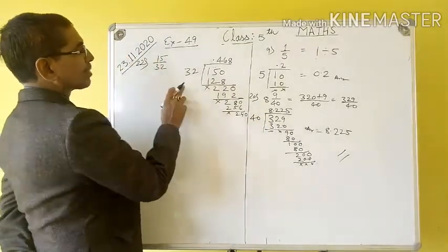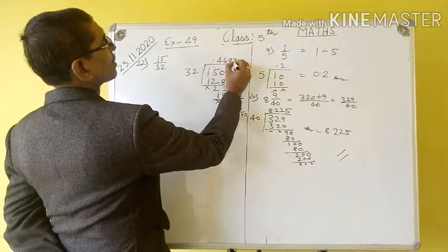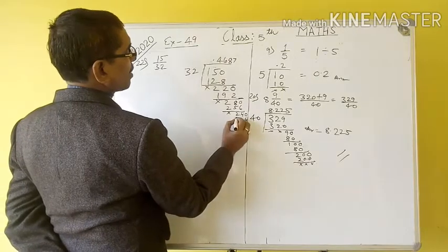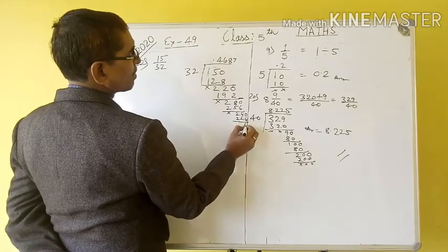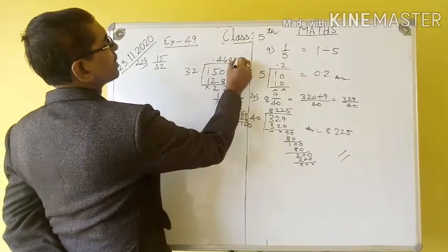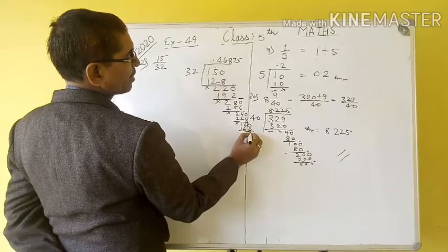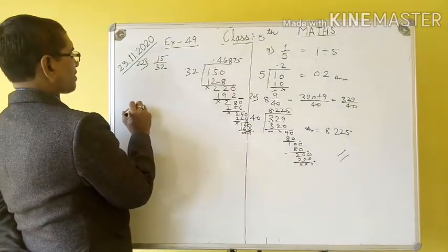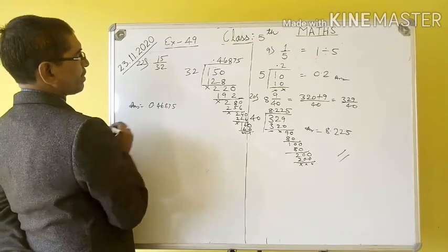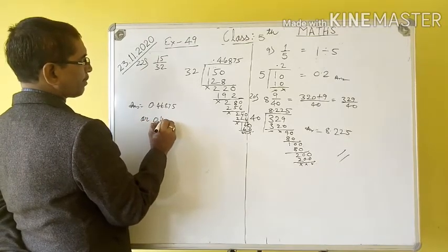3, 3 into 24. 7 into 14 is 1, 7 into 21 plus 1 is 22. 6 plus 1, 0. Now 3, 5 into 15, 5 into 15 plus 1 is 16. So our answer is 0.46875, or in round figure 0.47.